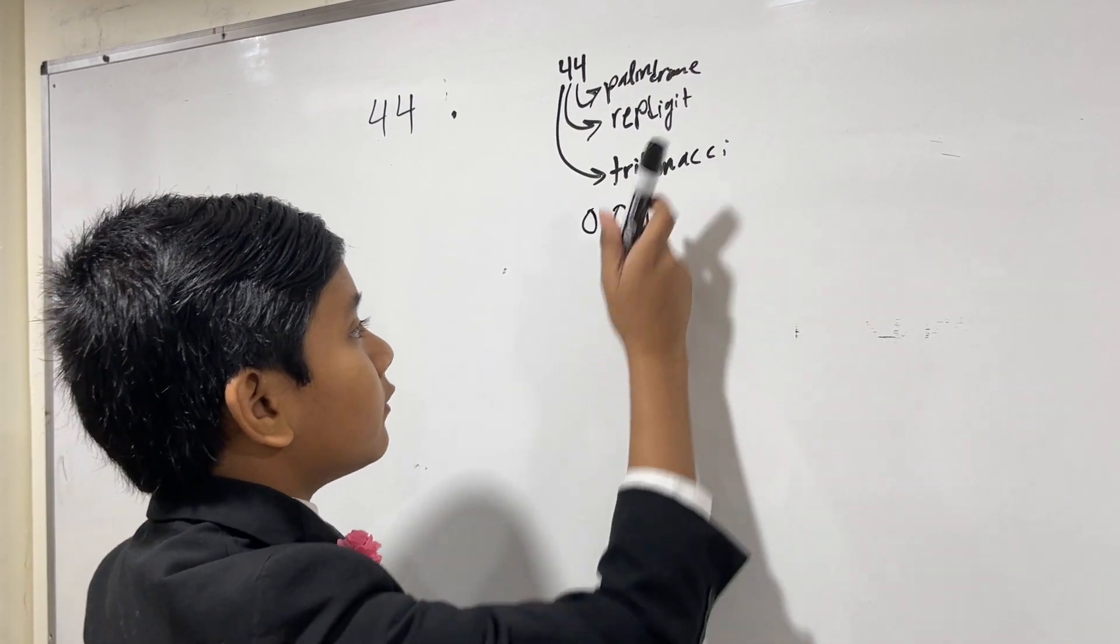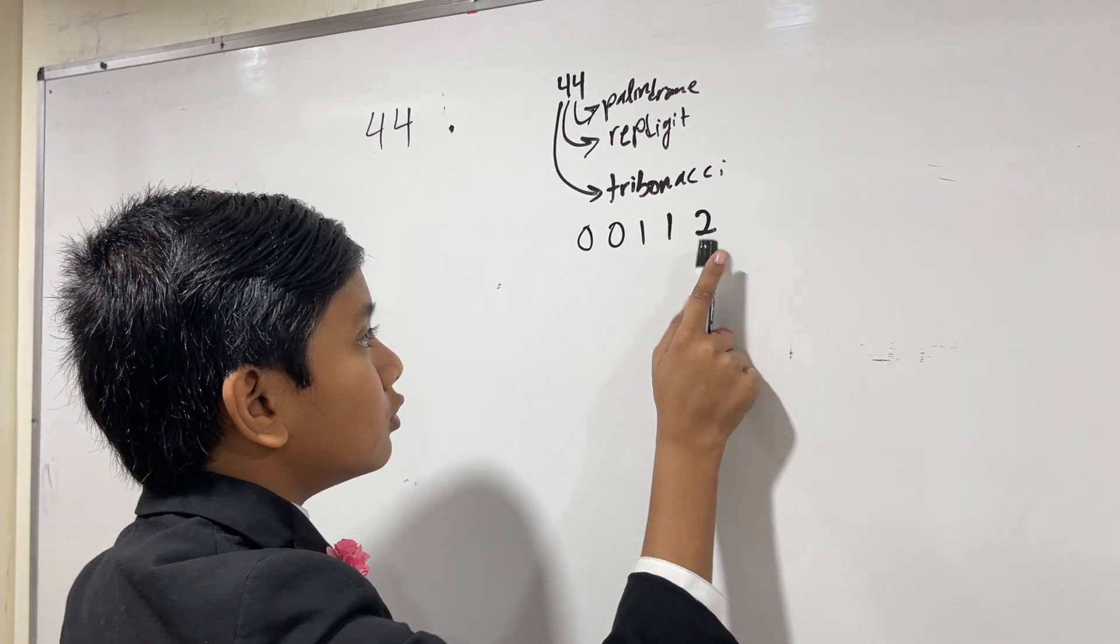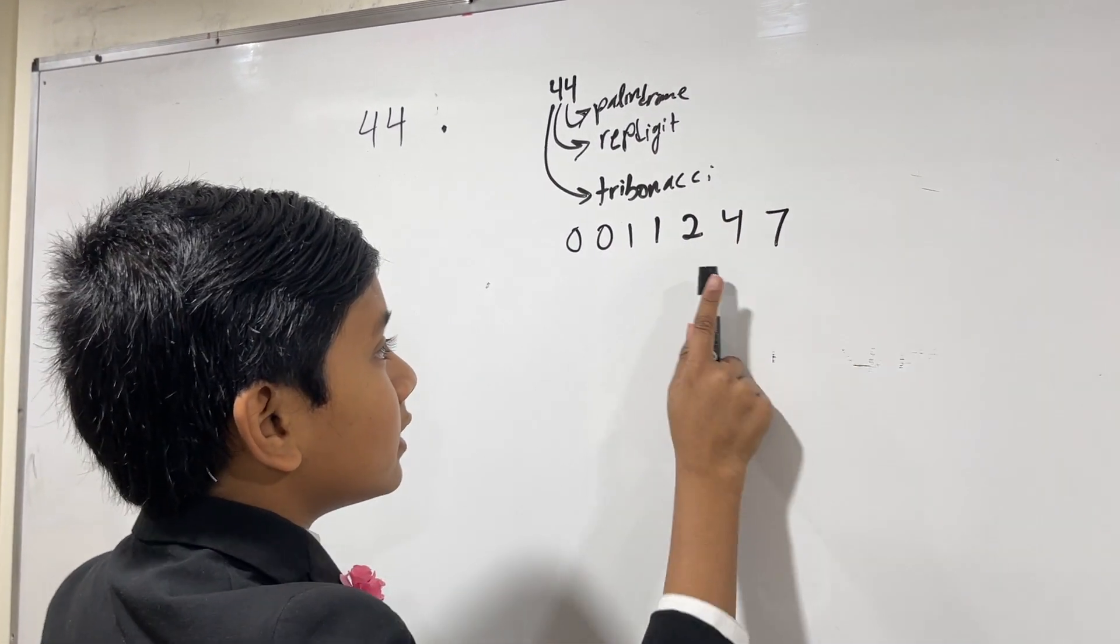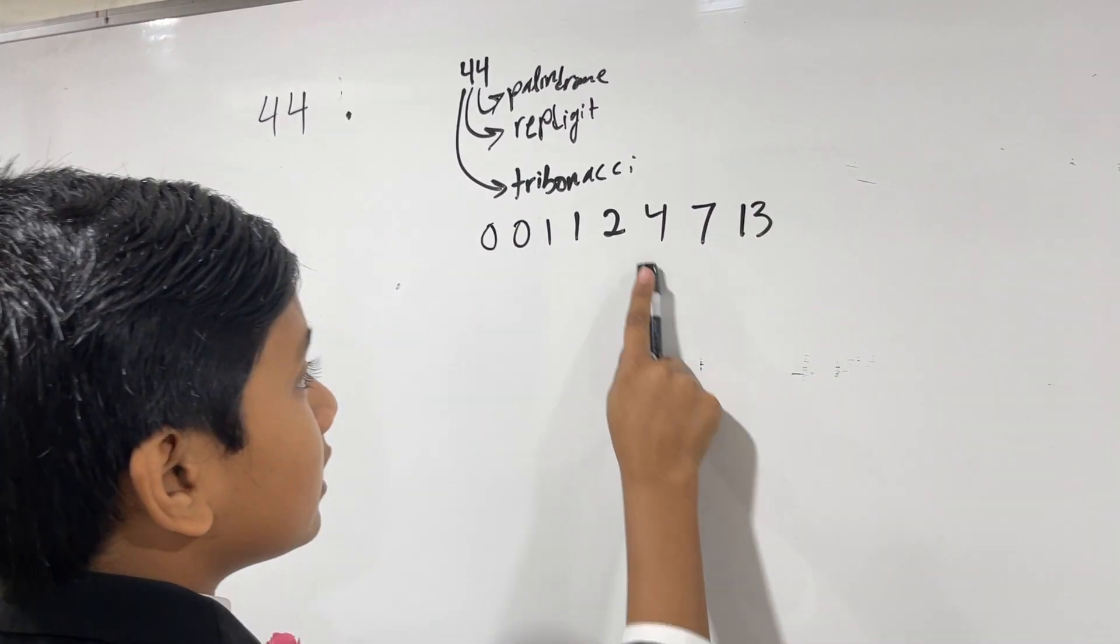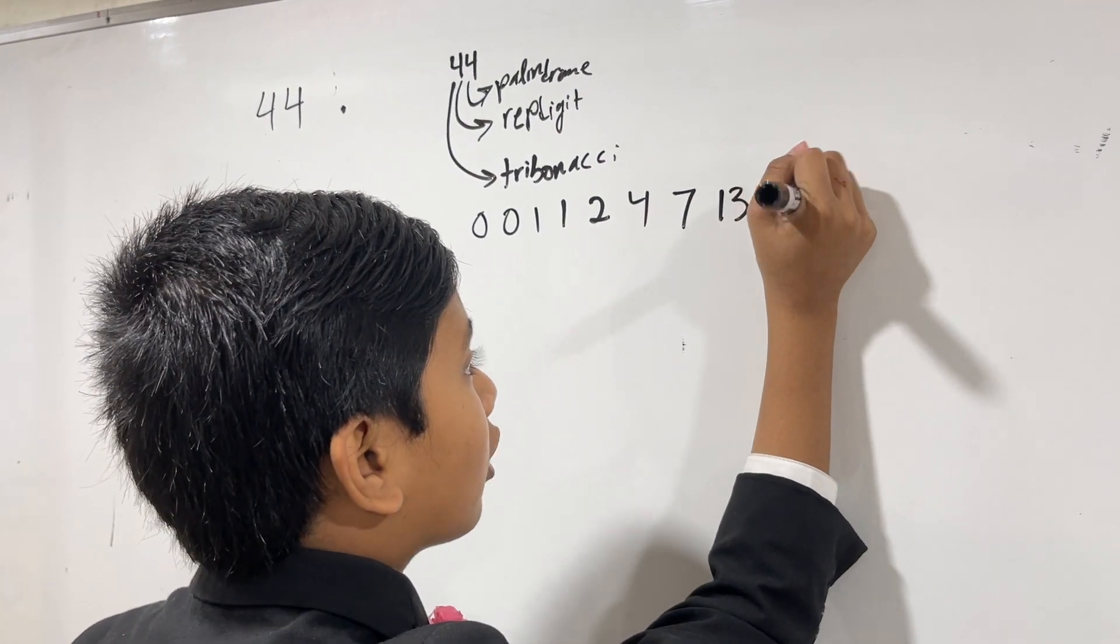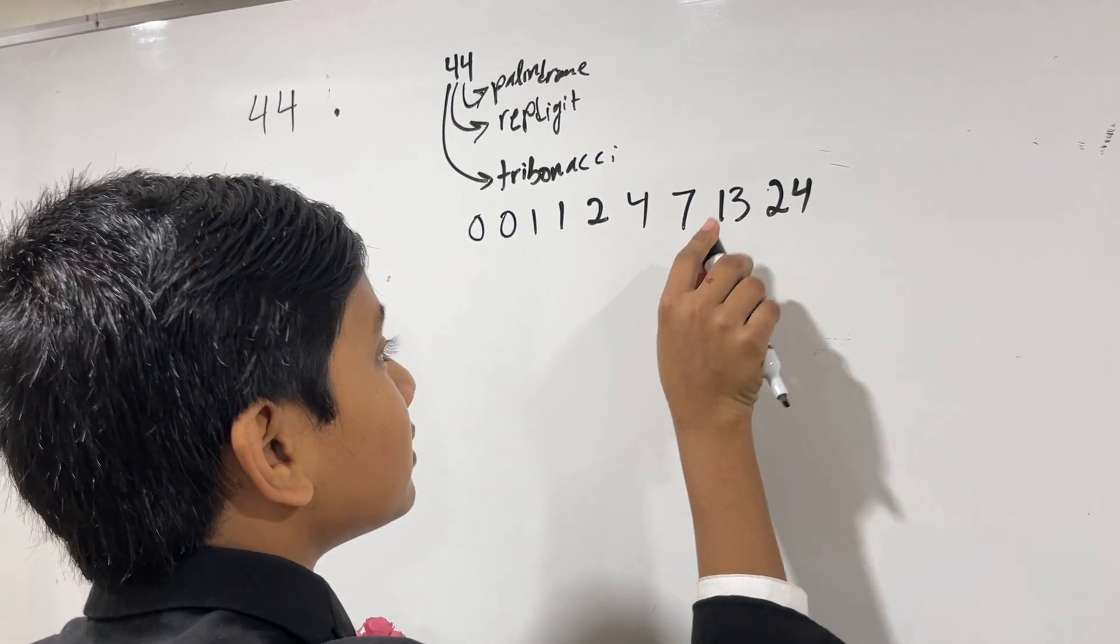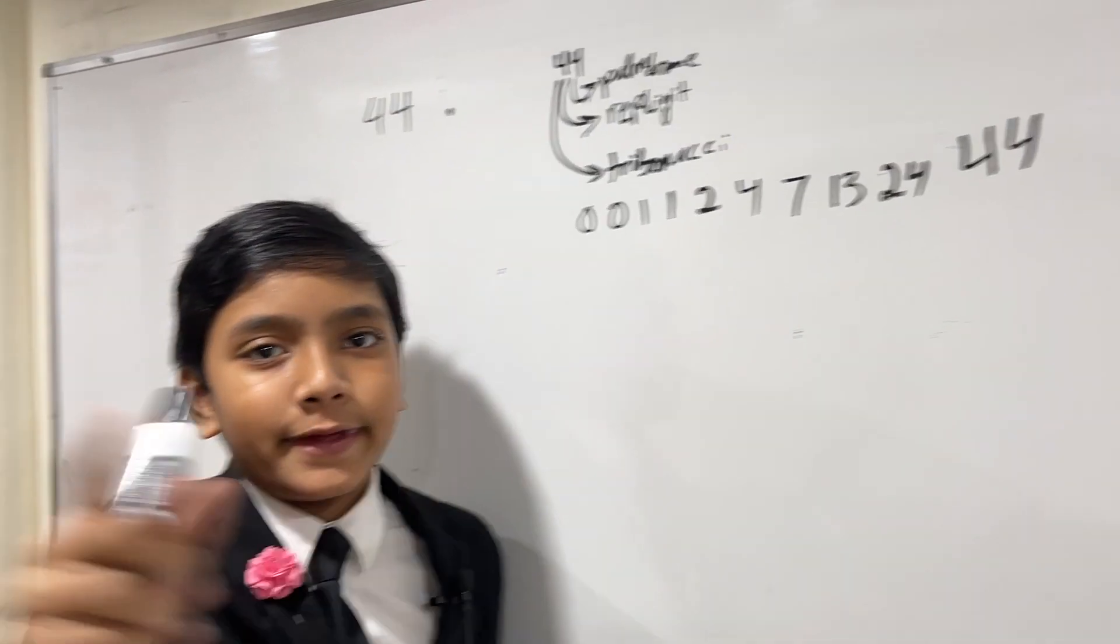So, 001, the sum of those is 1, the sum of those is 2, the sum of those is 4, the sum of those is 7, the sum of those are 13, the sum of those, 11 and 13, are 24. Then the sum of 7 plus 13 plus 24 is 44. That's pretty cool, ain't it?